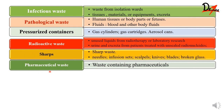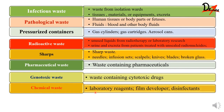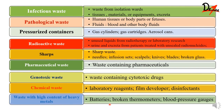Then we have pharmaceutical waste, which contains expired medicines. Then genotoxic waste — these are cytotoxic drugs and waste from these cytotoxic drugs. Chemical waste means laboratory reagents, film developers, and disinfectants used in clinics. Finally, waste with a high content of heavy metals such as batteries, broken thermometers, and blood pressure gauges. These are the nine different types of waste classification.